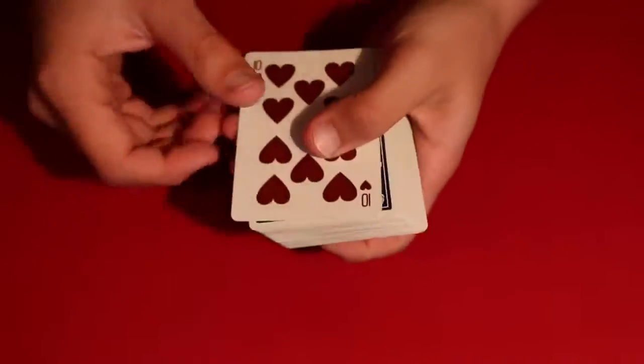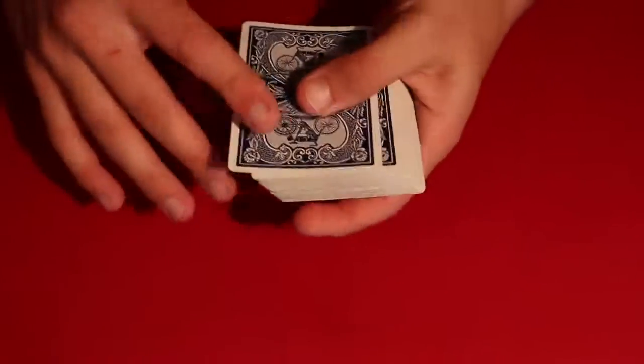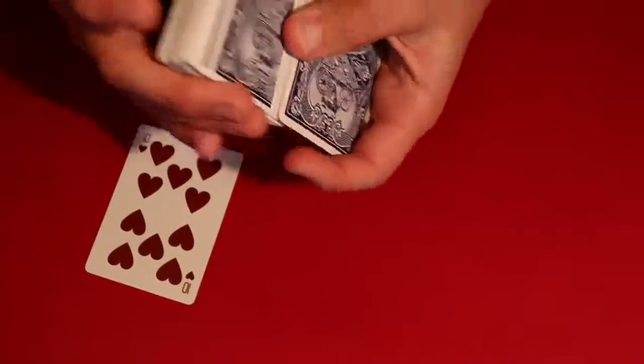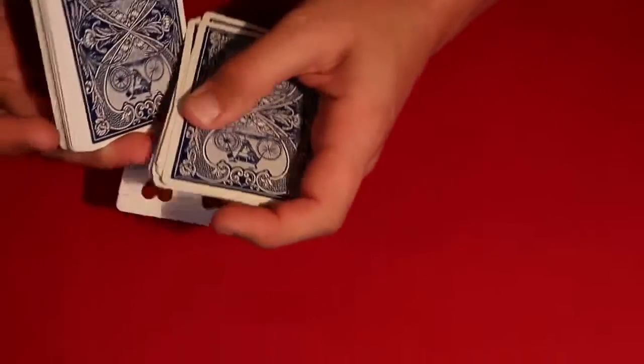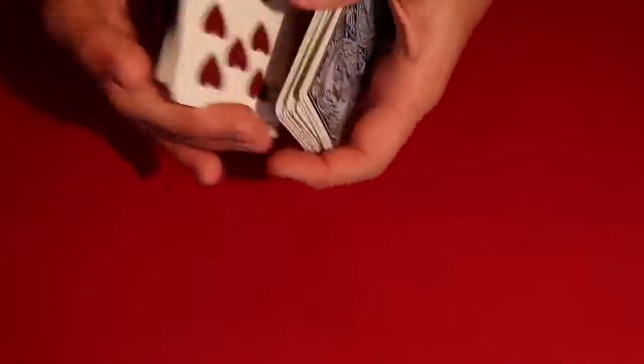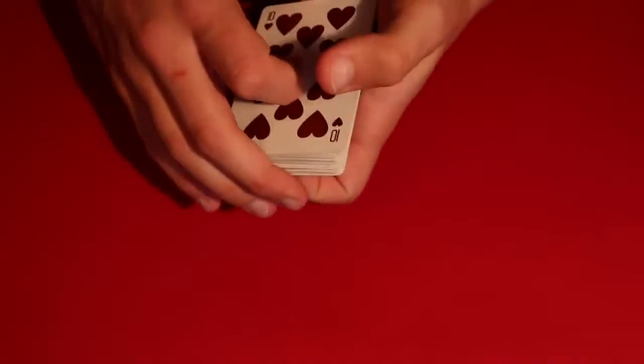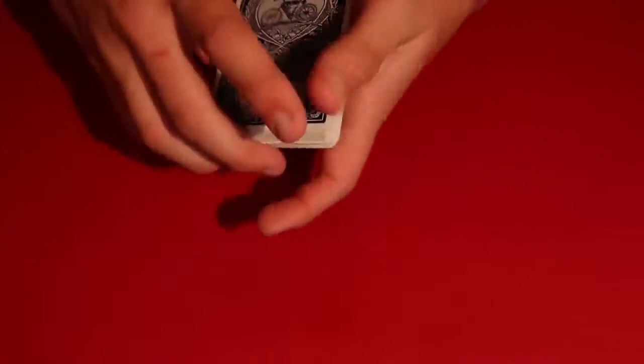And that's going to be how you bring the spectator's card to the top. So in real time you have the spectator's card, they go ahead they say stop, let's say they said stop right around here. You go ahead, you take their card and you leave a nice little out jog card like this. And just like that you brought their card to the top. Now the next step is to bring it to the bottom.